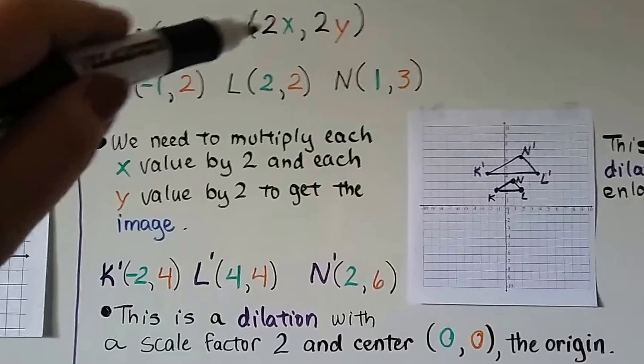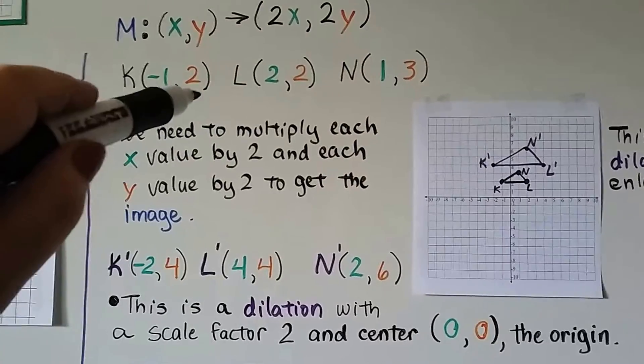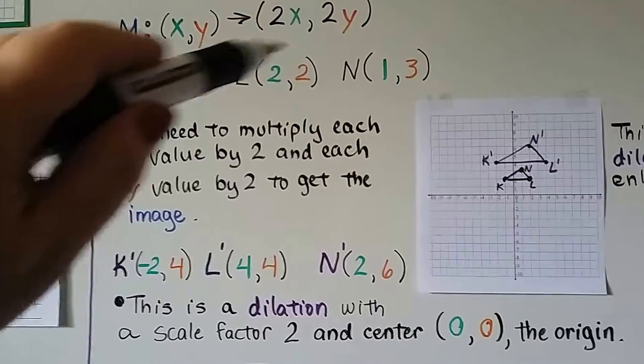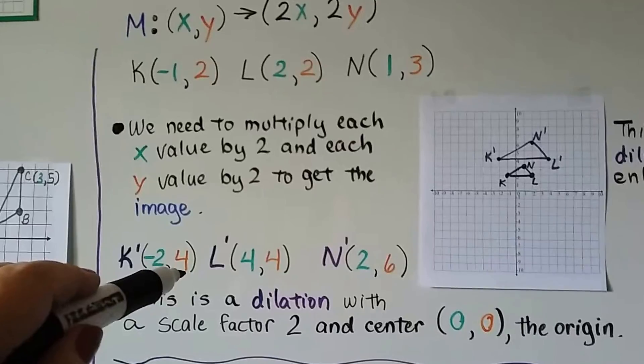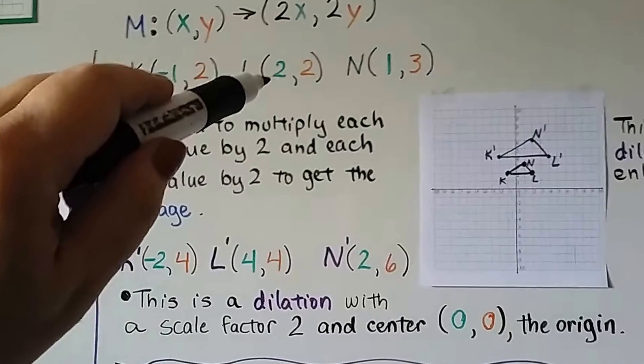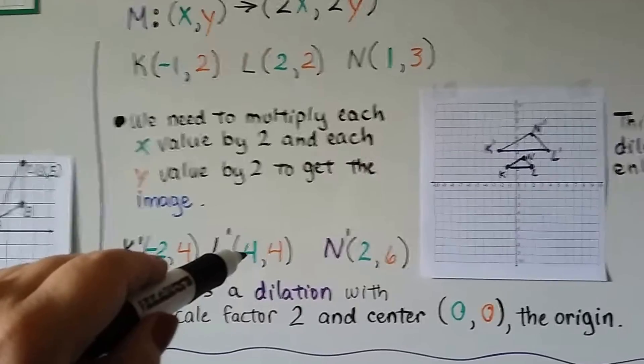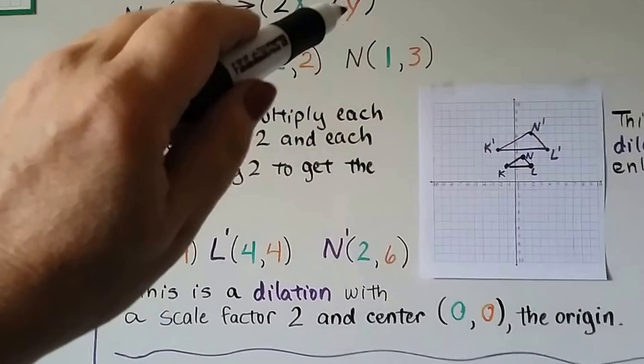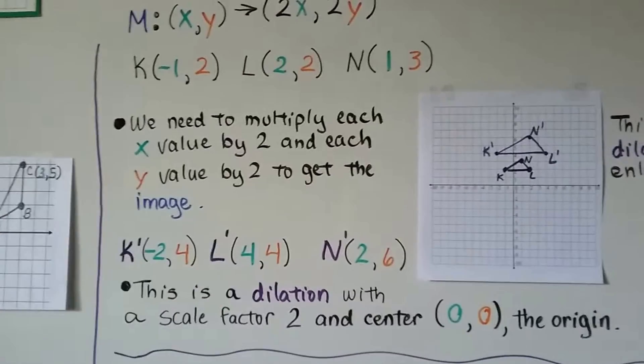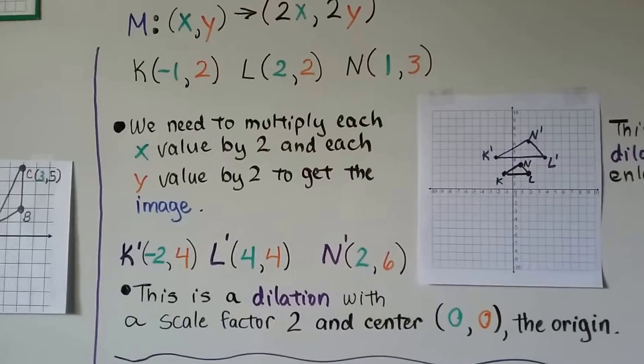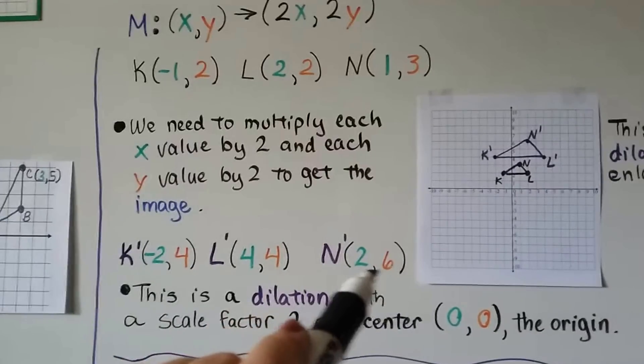We need to multiply each x value by 2 and each y value by 2 to get the image. K is a -1, we multiply that by 2, we get a -2. The y value is a 2, we multiply that by 2, we get a 4. For L, we had a 2, we multiply that by 2, and now L prime is a 4 for x. Our y value was a 2, we need to multiply that by 2, so now L prime's y value is a 4. We do it for N prime, we get a 2 and a 6.